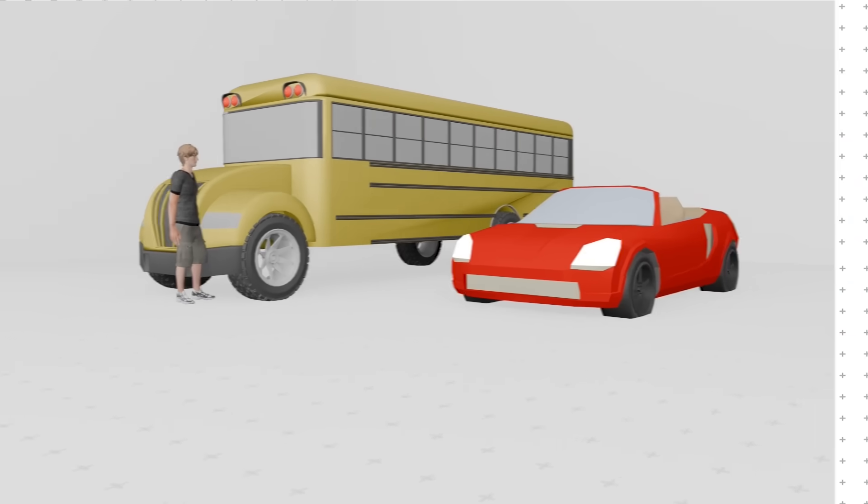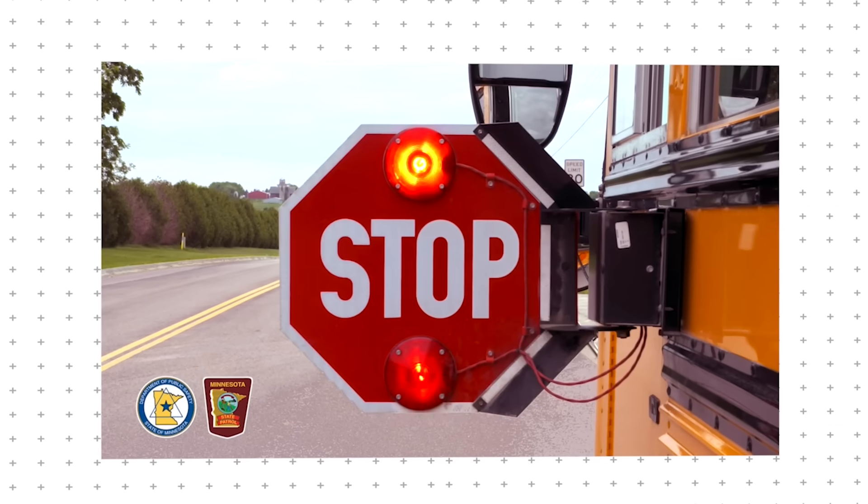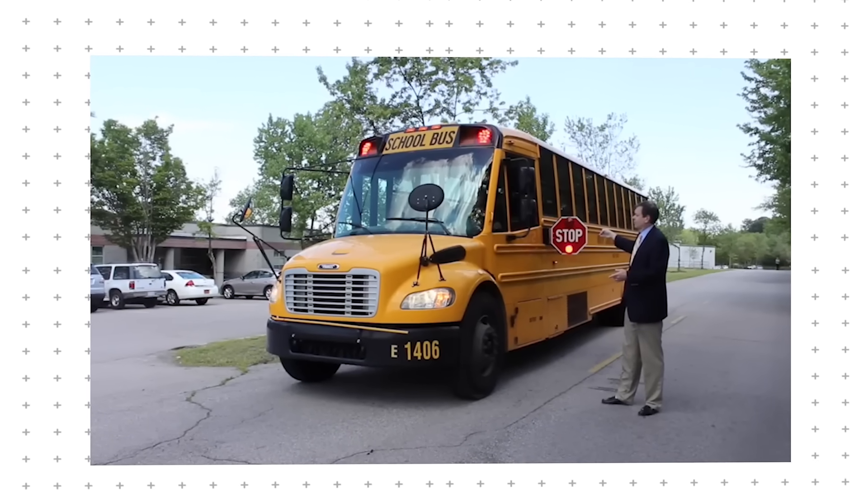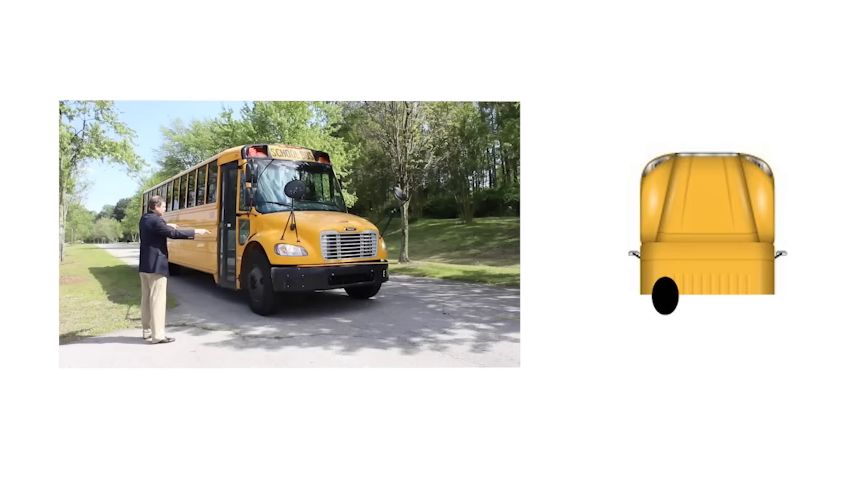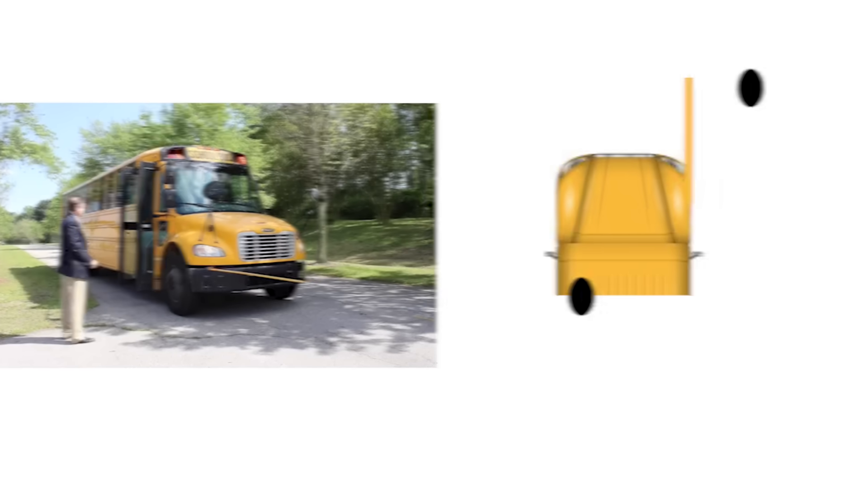That changed with the introduction of swing-out stop arms. Today's school buses use mechanized stop signs that extend outward, paired with flashing red lights that legally require cars to stop. To further protect students, many buses now use extended crossing gates, which force children to walk at a safe distance in front of the bus so they remain visible to the driver.